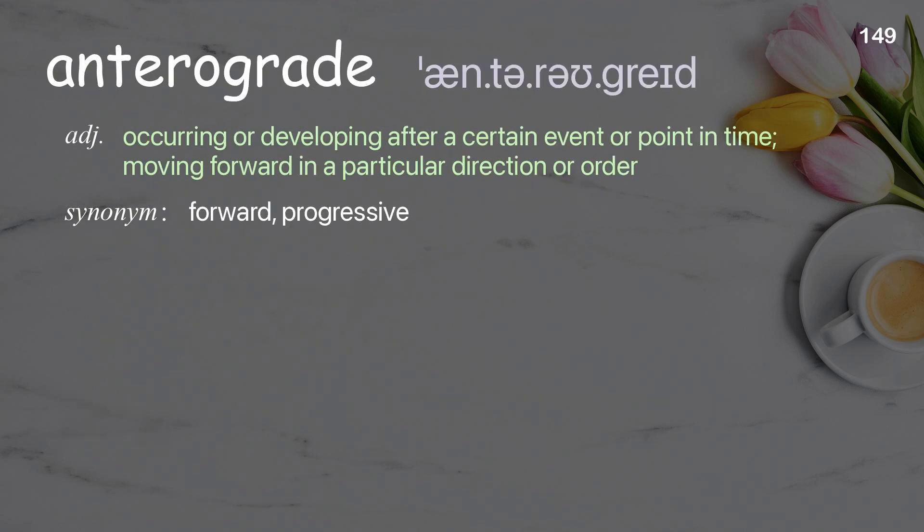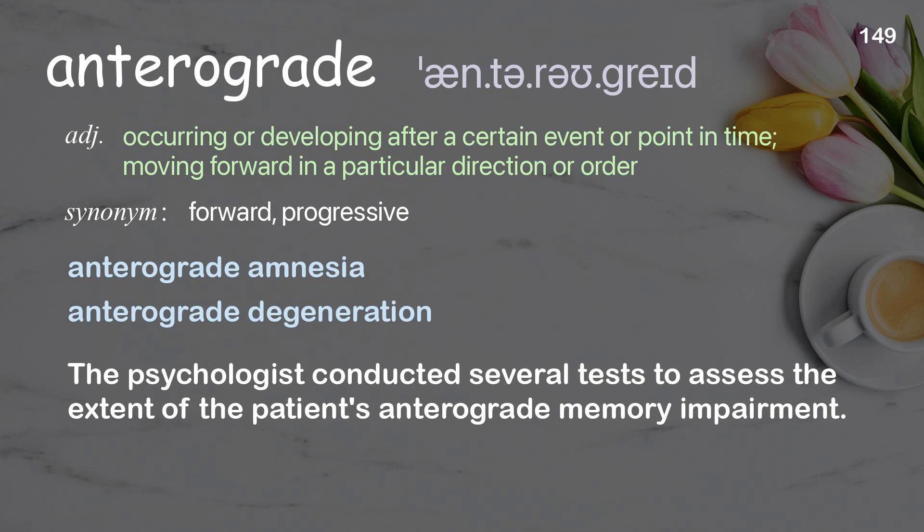Anterograde: occurring or developing after a certain event or point in time; moving forward in a particular direction or order. Examples: anterograde amnesia, anterograde degeneration. The psychologist conducted several tests to assess the extent of the patient's anterograde memory impairment.